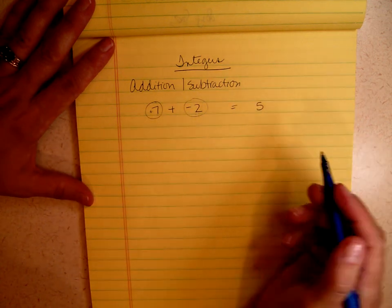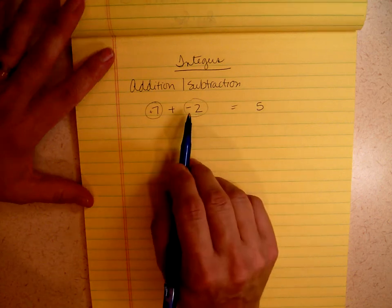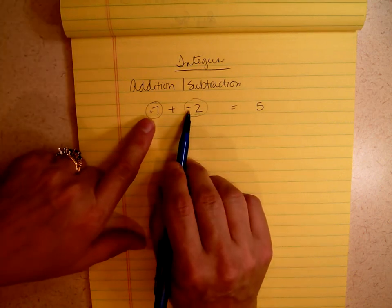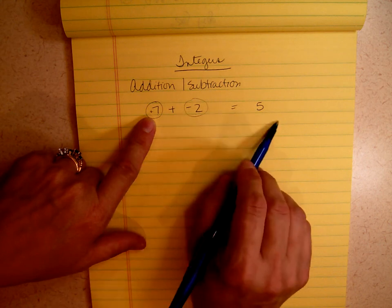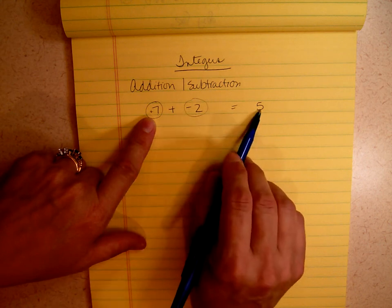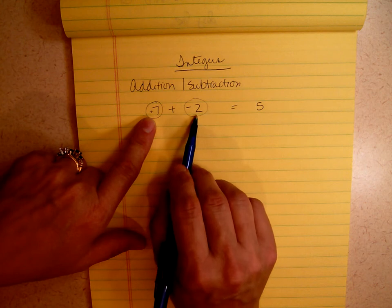How do I know if it's a positive 5 or a negative 5? I look at both of these numbers. Which number is bigger — 7 or 2? 7 is bigger, so this is a positive. When the signs are different, you always subtract and keep the sign of the bigger number.